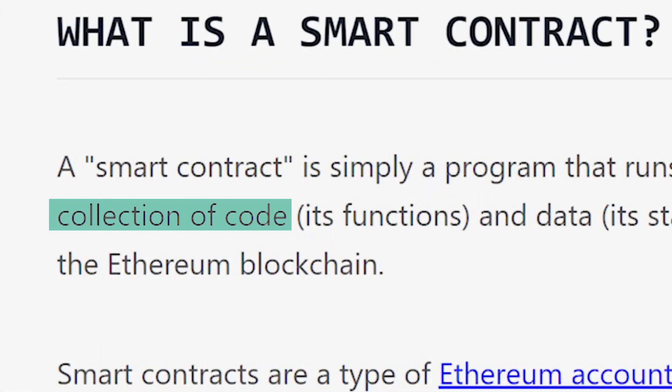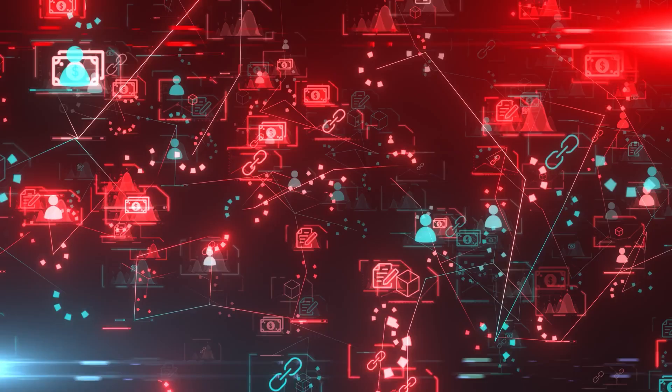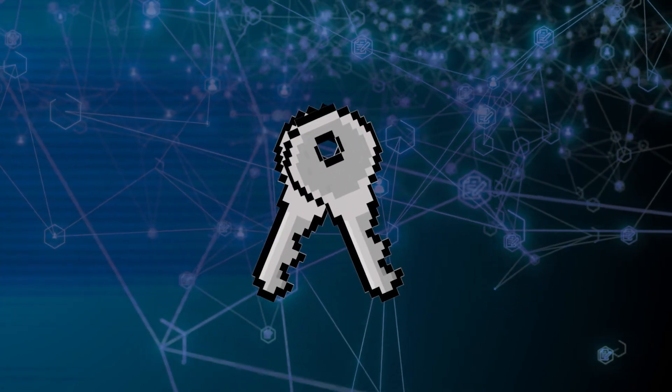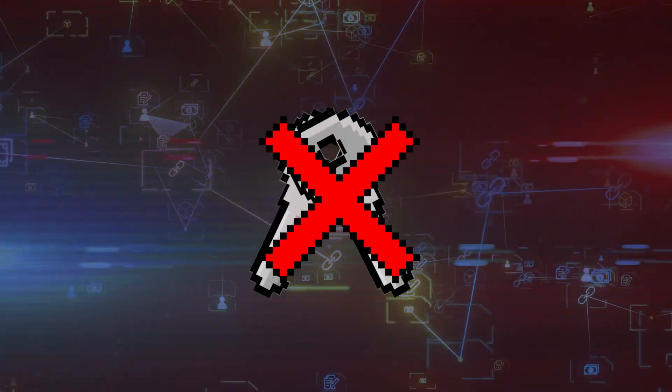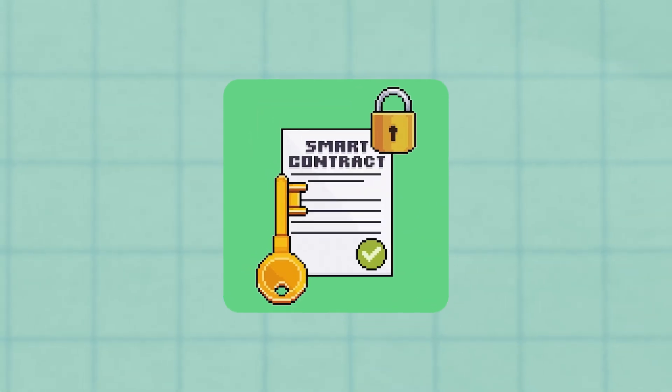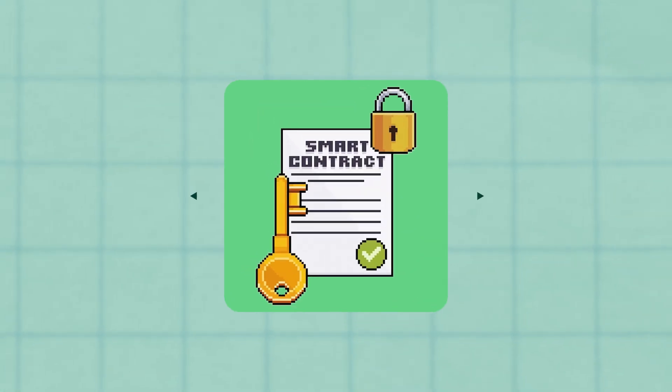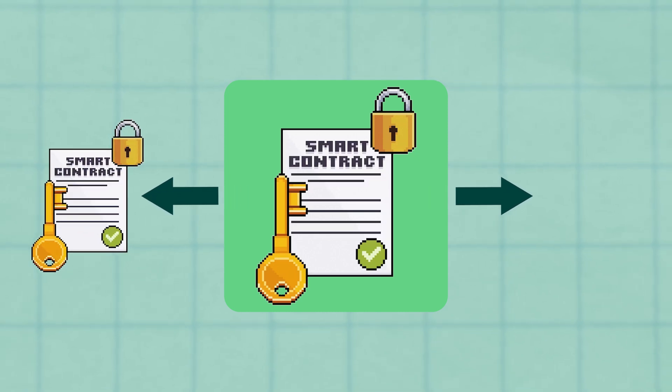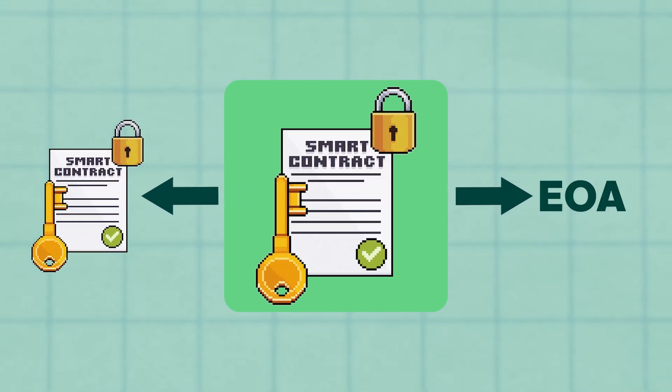Meanwhile, smart contracts are accounts that are deployed on the network and run according to the code they contain. They are not controlled by a user and so do not possess private keys. They execute whenever instructed by another account, whether that's another smart contract or an EOA. Herein lies the issue: though smart contracts are flexible in their functionality, in the end, all actions need to be initiated by an EOA.